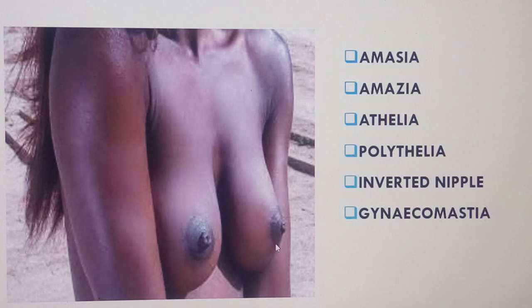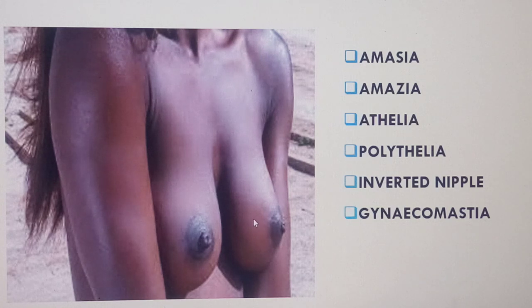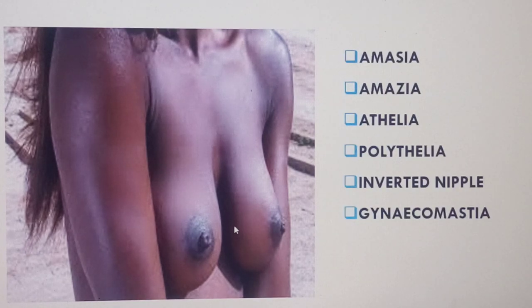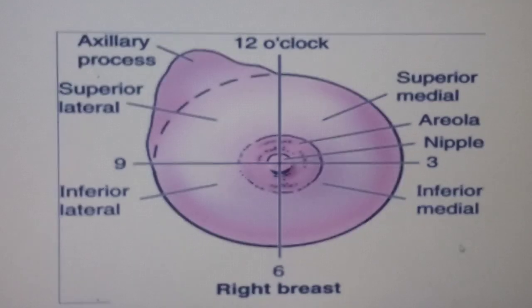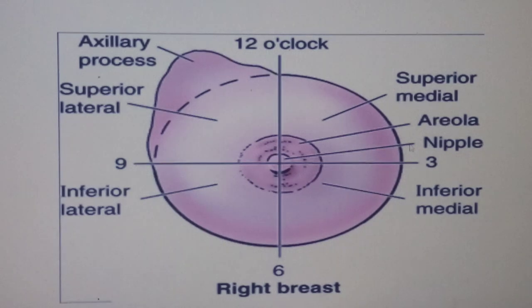In males we don't usually have substantial breast tissue, but sometimes you may see that, and that is what you call gynecomastia. Usually people with gynecomastia have a lot of prolactin in their blood.